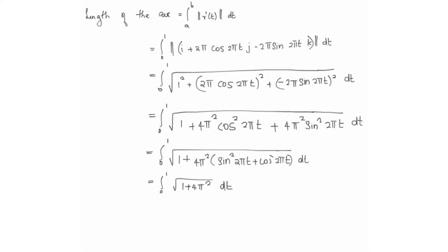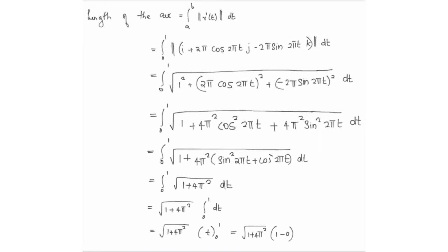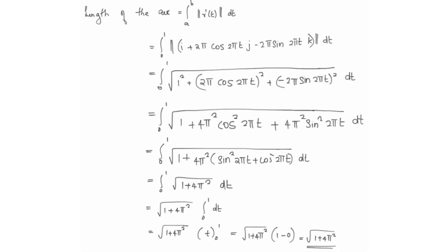Since 1 + 4π² is a constant, we integrate with respect to t. The integral of 1 dt from 0 to 1 equals t evaluated from 0 to 1. Substituting the upper and lower limits gives: square root of (1 + 4π²) · (1 − 0) = square root of (1 + 4π²).